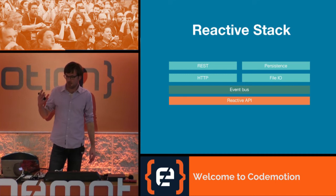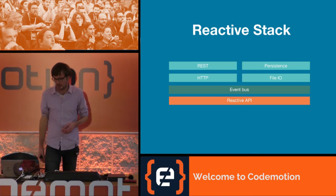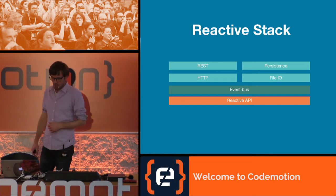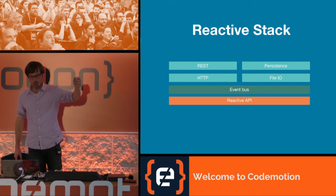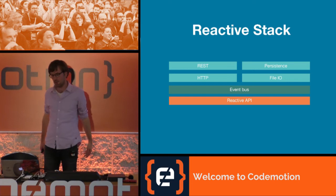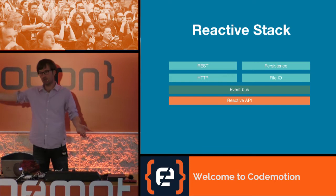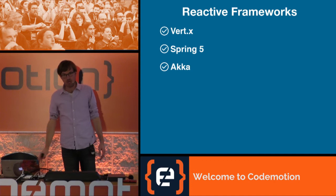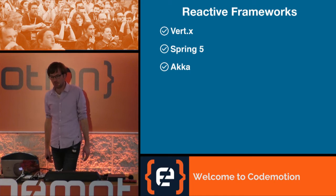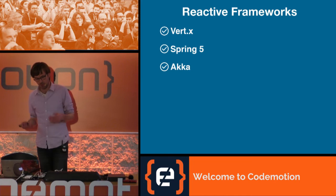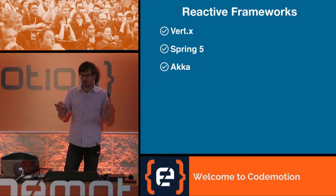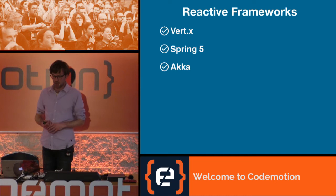If you build applications, you typically use REST, some persistence, maybe HTTP or file IO, a way to communicate between modules like an event bus, and a reactive API like RxJava or Project Reactor. In Java there are three main candidates for a full reactive stack: Vert.x version 3 (released 2015), Spring 5 (released end of last year), and Akka (which has been there since around 2010, making it the oldest).